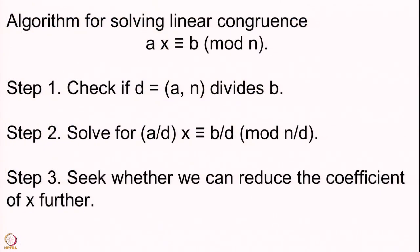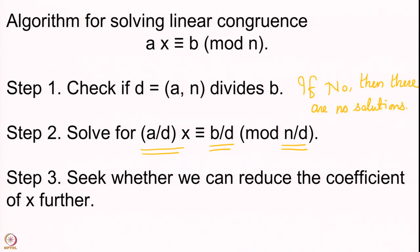Welcome back. We are considering the solutions to linear congruences modulo n and we saw that there is an algorithm. The algorithm had two lemmas which we have proved, but let me put the algorithm here for your reference. In the first step, we have been able to reduce the coefficient of x and the constant term by dividing by the GCD. If the GCD does not divide the constant term, there are no solutions.